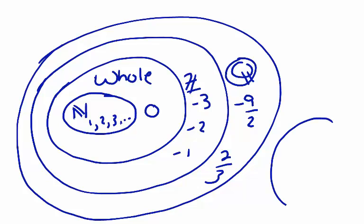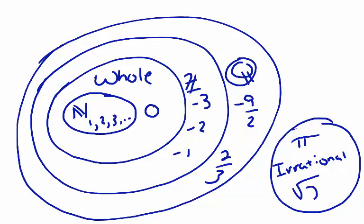And finally we have our irrational numbers, and these include numbers such as pi and square root of 2.